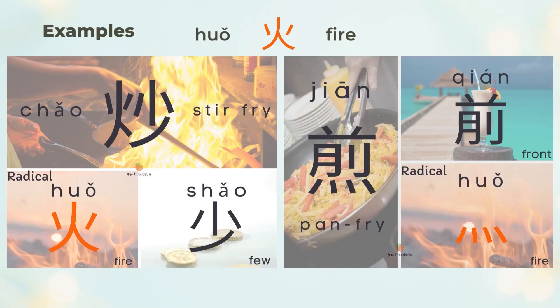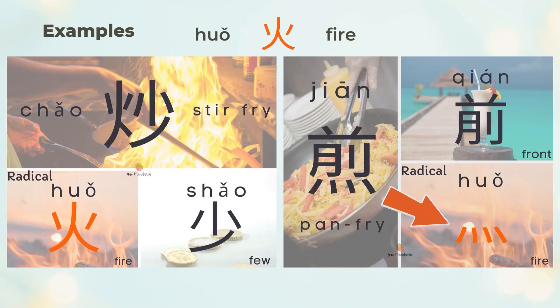炒 (stir-fry) is an example of 火 on the left. When 火 is on the bottom, it transforms into four dots, as you can see in 煎 (pan-fry). Please note that the left dot is towards the left, while the remaining three dots are to the right.